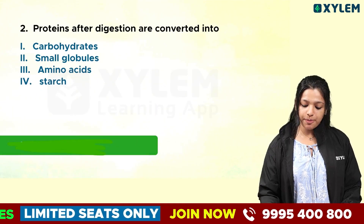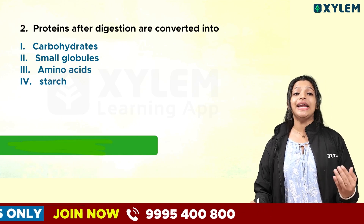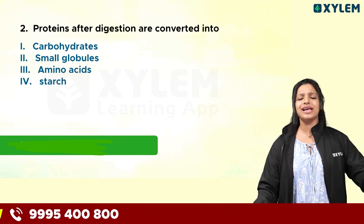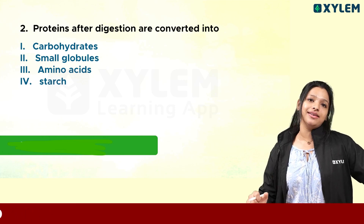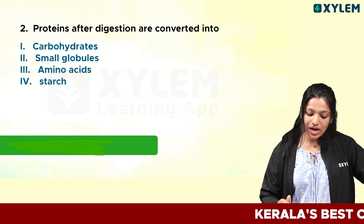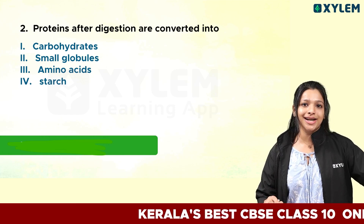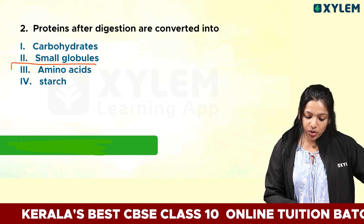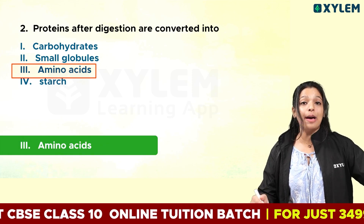Second question: proteins after digestion are converted into what? The options are carbohydrates, small globules, amino acids, or starch. The answer is amino acids. Because protein breakdowns are converted into amino acids.